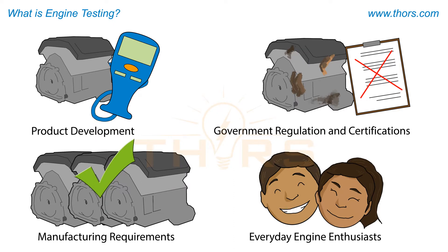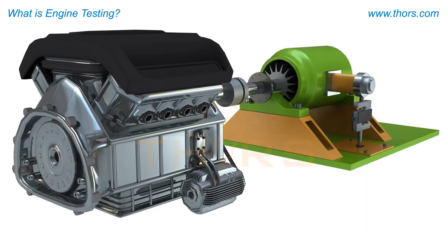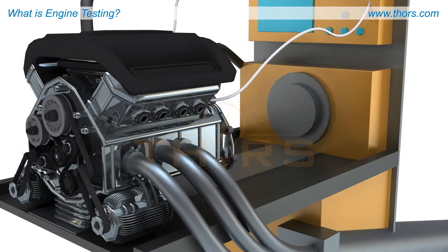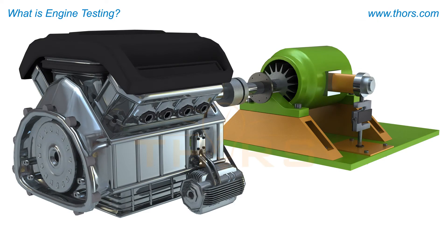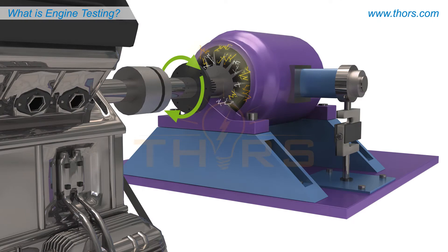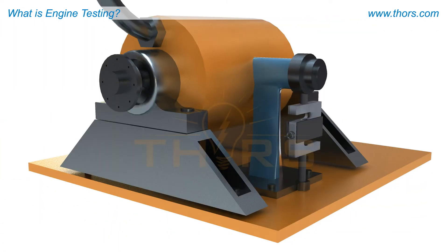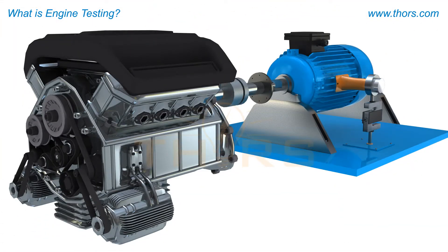There are different methods used in order to test these components within an engine. The engine can either be hot tested with a load put on it or an unloaded hot test can be performed. A loaded hot test includes any sort of dynamometer, which can be an eddy current, water brake, or regenerative motor of some sort.